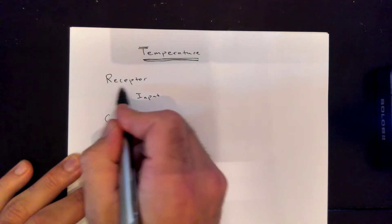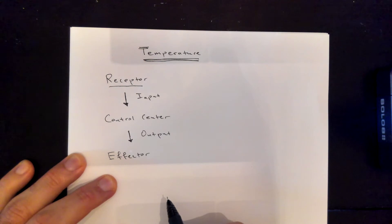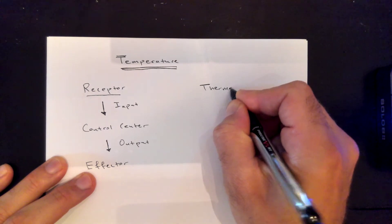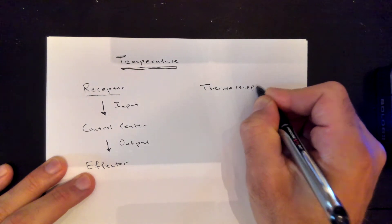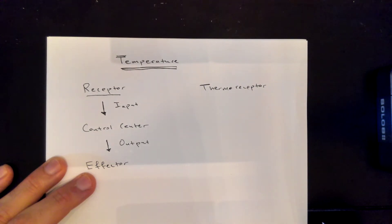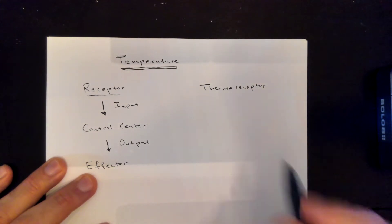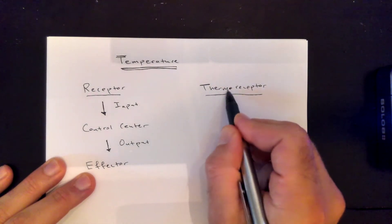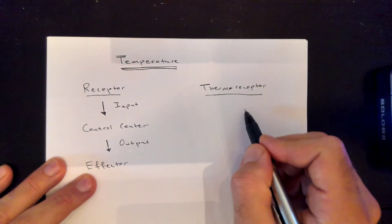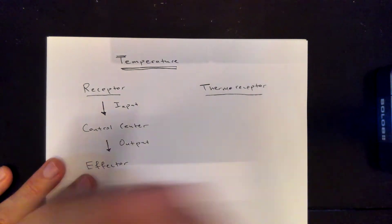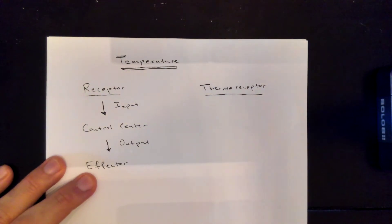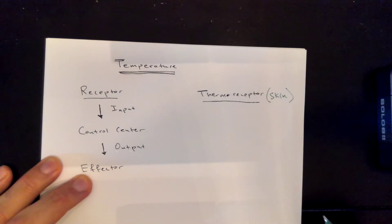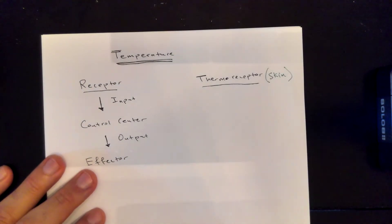For temperature, the receptor is called a thermoreceptor — just like a thermometer measures temperature, thermo means temperature. You also want to know where these are found: thermoreceptors are found in the skin. That's important to know — your skin is where your thermoreceptors are located.